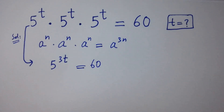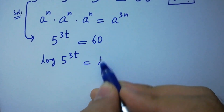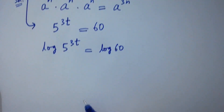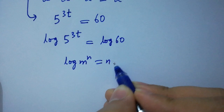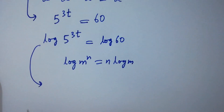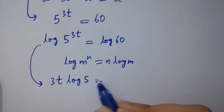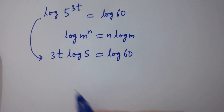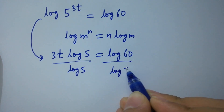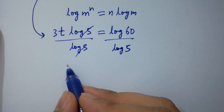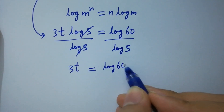Take log on both sides. Log 5 to the power 3t equals log 60. Since log m to the power n equals n log m, we have 3t log 5 equal to log 60. Divide by log 5 on both sides. Log 5 and log 5 cancel. We get 3t equal to log 60 over log 5.